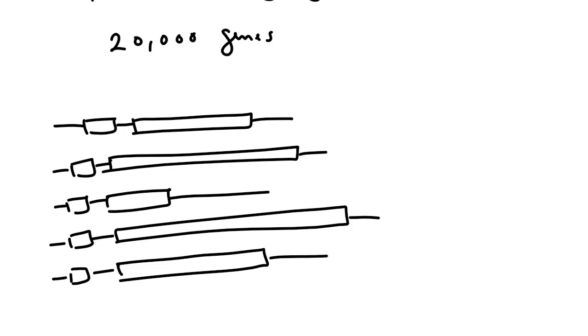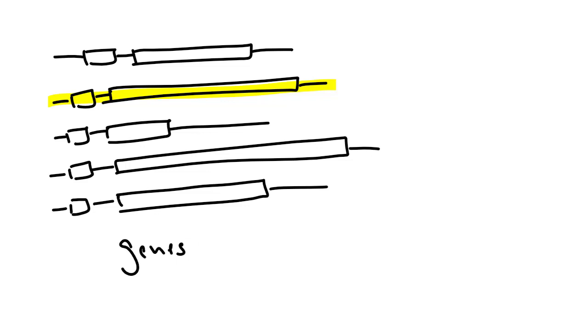Imagine 20,000 plus of these genes. Now some that are permanently silenced will never bind RNA polymerase and make messenger RNA. For example, a particular gene might be permanently silenced in a certain cell type, while in another cell it could be available.